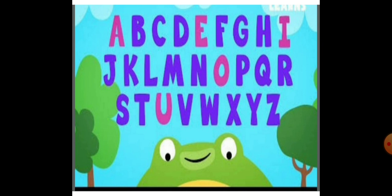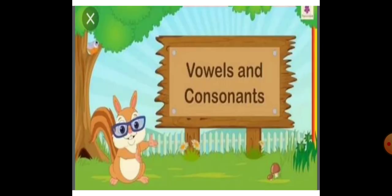Children, now I am going to teach you vowels and consonants. In English, there are vowels and consonants. Now you might be thinking, what is a vowel and what is a consonant? Vowel means, in other language, I think you know Swar and Vyanjan. In the same way, even in English, vowels means Swar and consonants means Vyanjan.